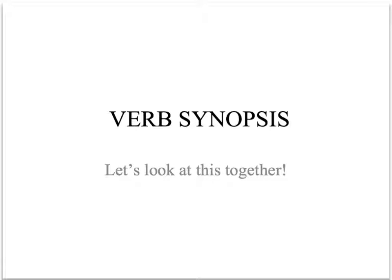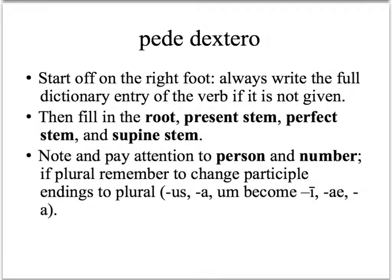Let's walk through how to do a verb synopsis effectively and efficiently. Begin on the right foot — always make sure that you write the full dictionary entry of the verb at the top of the synopsis sheet. Then fill in the root, present stem, perfect stem, and supine stem at the top of the sheet.